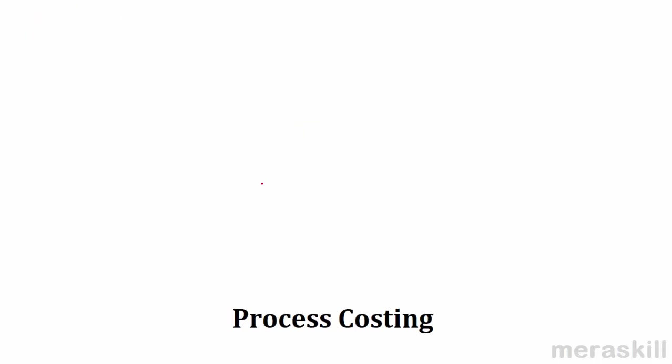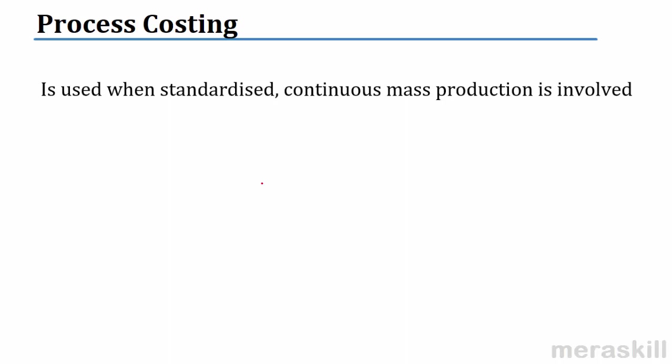Let us begin, students. Process costing. What do you mean by process costing or when is process costing used? Process costing is used when standardized continuous production is involved, as against job costing on the other side. Job costing had something customized instead of standardized — say, a bike repair or painting of a particular house. These become individual jobs, and in such instances job costing is applicable. But when there is standardized continuous production, it is called process costing.